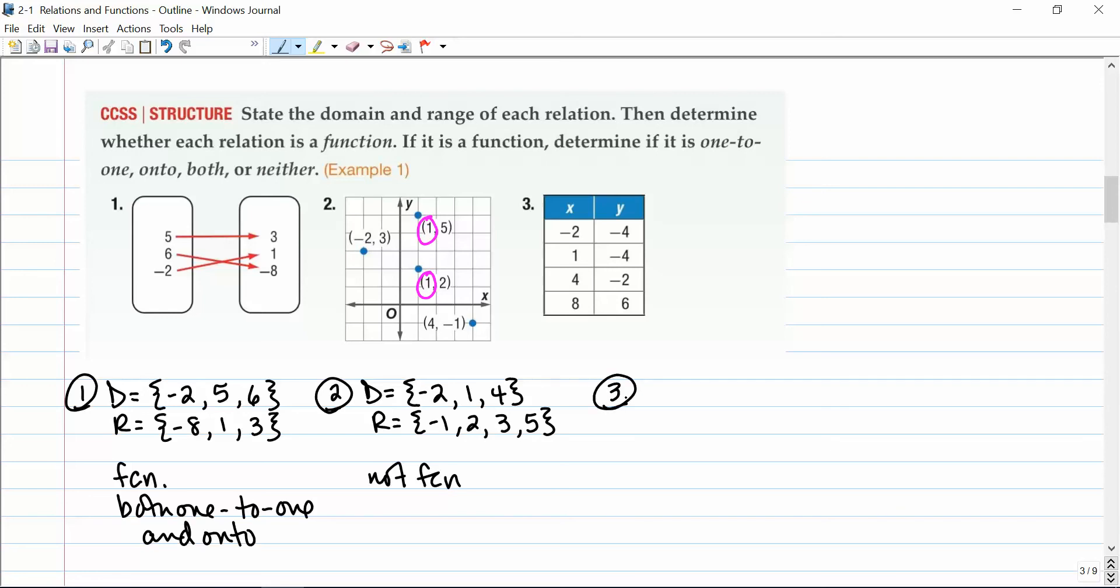Number three here is a table. And my domain, I'm just going to read the numbers out of the x column. Negative two, one, four, and eight. My range, I'm just going to read the numbers out of the y column. Negative four, negative two, and six. And this is indeed a function, because none of my x's repeat. However, this function is not one-to-one, because you'll see that there's two different x's that go to the same y. So it's not one-to-one, but it is onto. Because it's okay to have repeated y's, and all of my y's are being used.